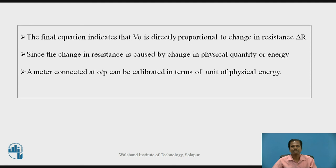The final equation indicates that the output voltage is directly proportional to the change in resistance ΔR. Since the change in resistance is caused by a change in physical quantity or energy, a meter connected at the output can be calibrated in terms of units of physical energy.